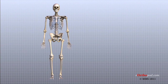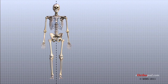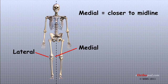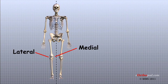Many parts of the body have duplicates, so it is common to describe parts of the body using terms that define where the part is in relation to an imaginary line drawn through the middle of the body. For example, medial means closer to the midline, so the medial side of the knee is the side that is closest to the other knee. Structures on the medial side usually have medial as part of their name, such as the medial meniscus.